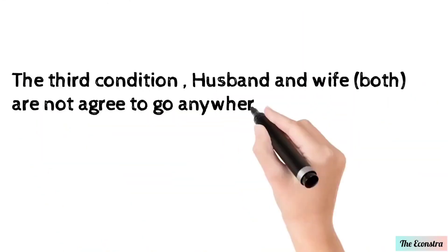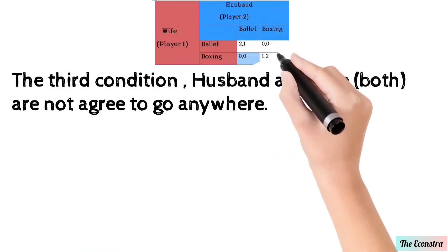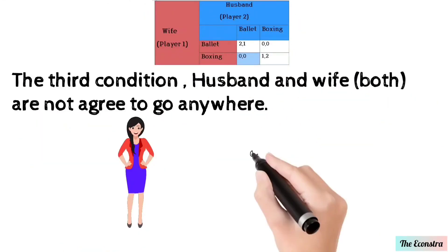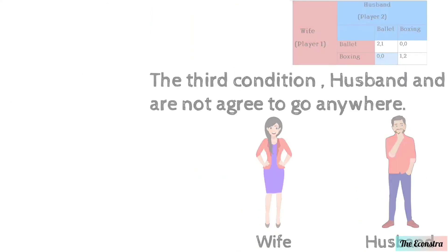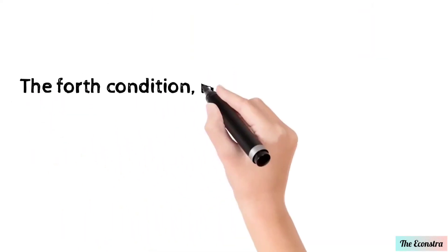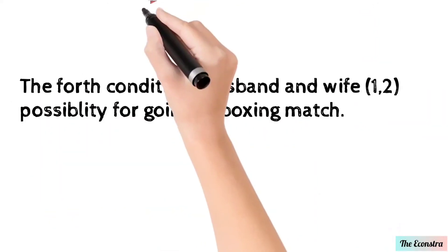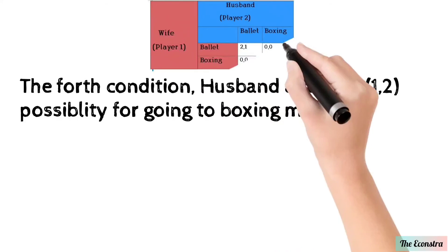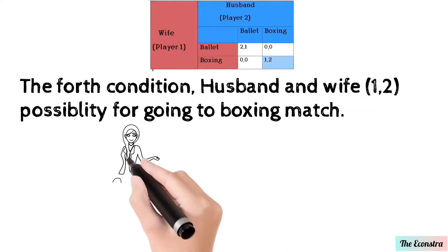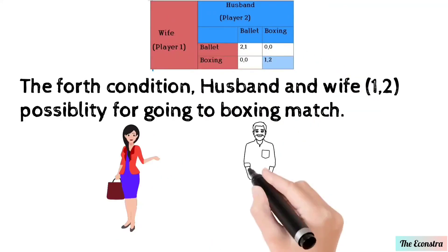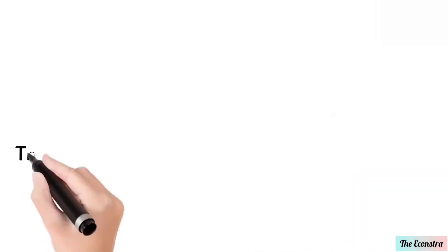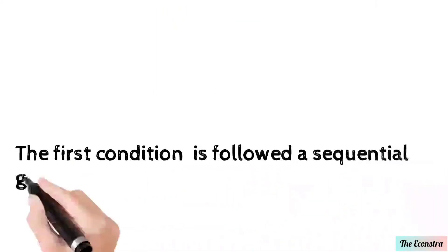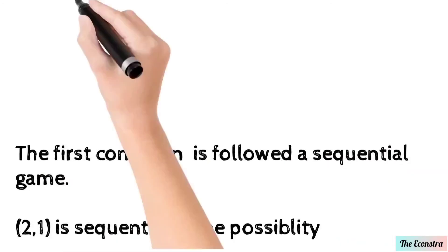In the third condition, husband and wife both do not agree to go anywhere. In the fourth condition, husband and wife both agree to go to the boxing match, with a payoff proportion of 1 to 2.